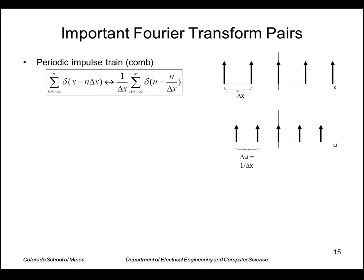Finally, we're going to see the use of this is kind of handy. The function that's a series of impulses, or a comb function, because it looks like a comb. It's a summation of impulses separated at delta x. That transforms to a comb function separated by intervals of 1 over delta x.